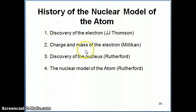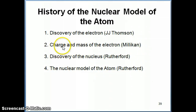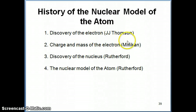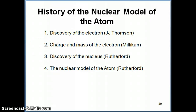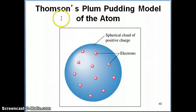In the previous video we talked about Millikan's experiment, the oil drop experiment, and how he was able to use that experiment to determine the charge of the electron and then the mass of the electron as well. Now remember that the original discoverer of the electron was JJ Thomson, so using the results obtained by his own experiments and Millikan's, he then came up with a model of the atom, which is shown here.